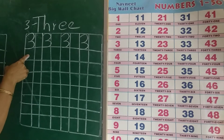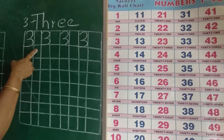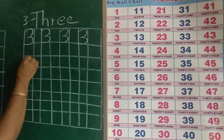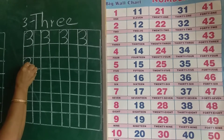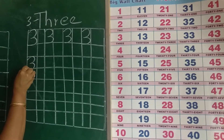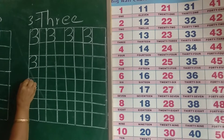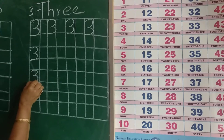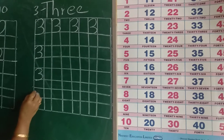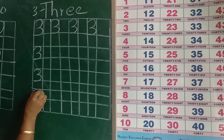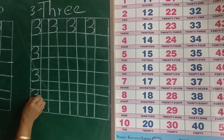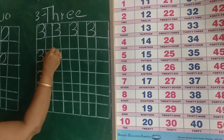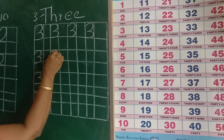Again, leave 1 square here. 1 square here also. This is number 3. This is number 3. You have to write it like this.